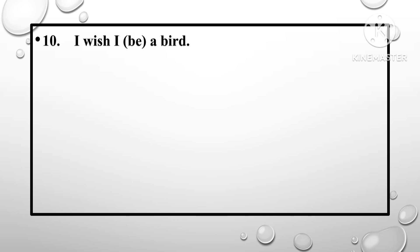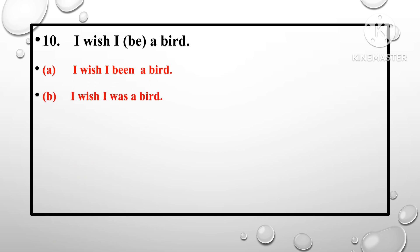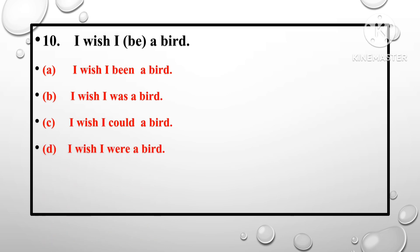Question number 10: 'I wish I be a bird.' Options: I wish I been a bird; I wish I was a bird; I wish I could be a bird; I wish I were a bird. After 'I wish,' 'it is time,' 'I hope,' we use past subjunctive. The correct answer is 'I wish I were a bird.'